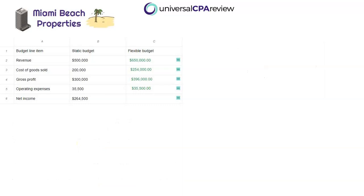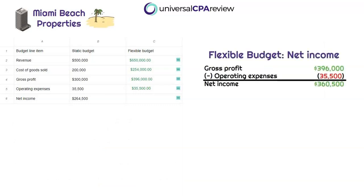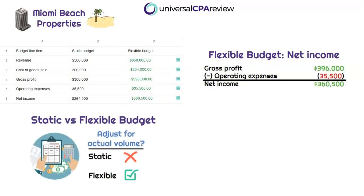The last line is net income, which includes all revenue, cost of goods sold, and operating expenses — all of which we've already calculated. We take gross profit of $396,000 and subtract operating expenses of $35,500, giving us net income of $360,500. We've now covered all required budget line items for the flexible budget. Just remember: the key difference is that the flexible budget is based on actual volumes, using the same assumptions as the static budget but updated for actual volumes, making it much easier to compare to actual results since volume is not a factor.